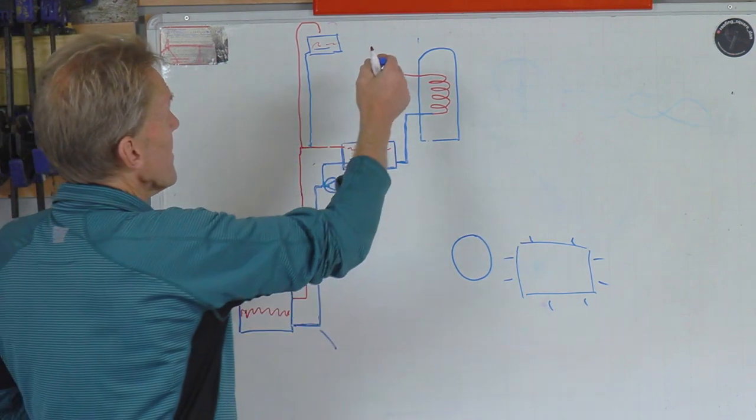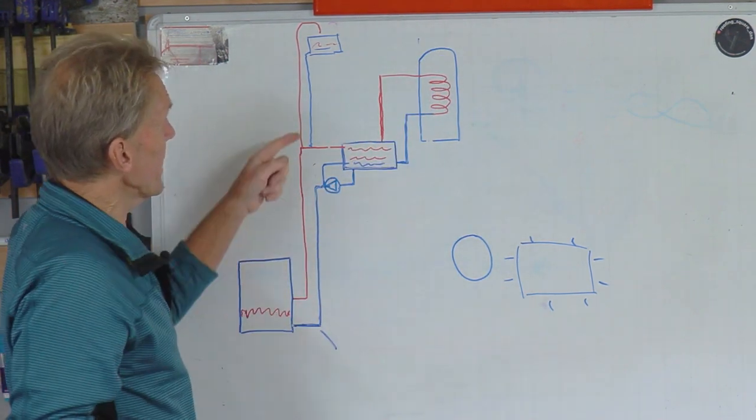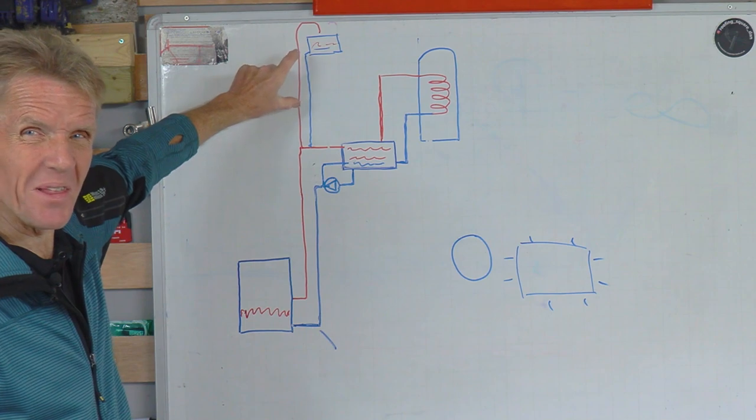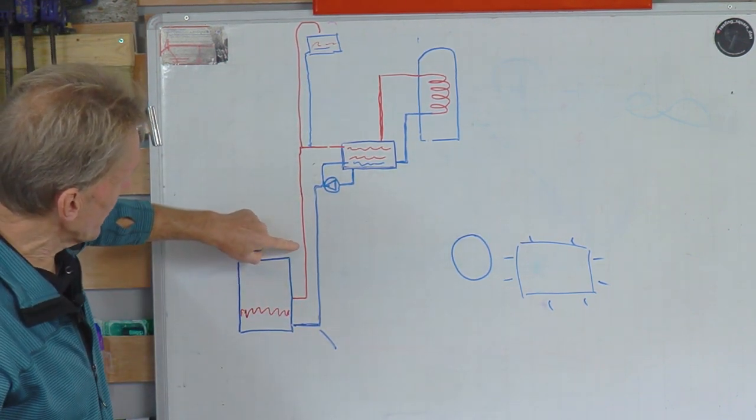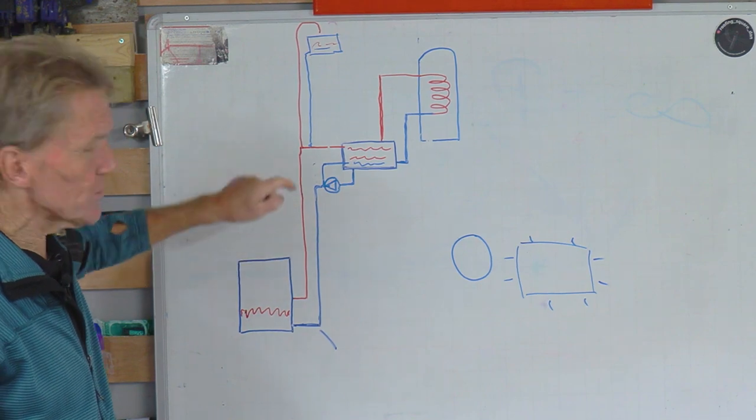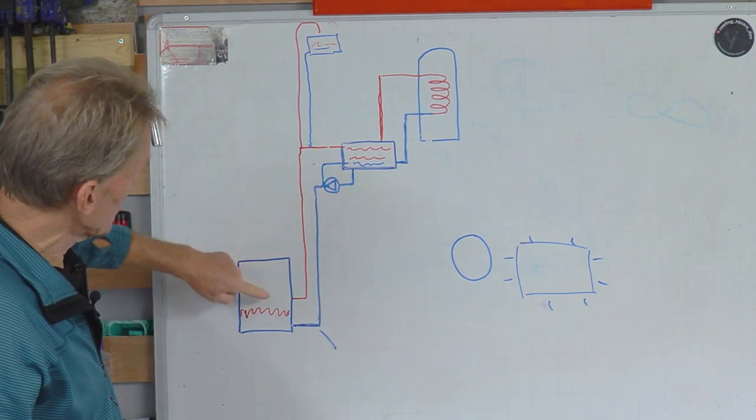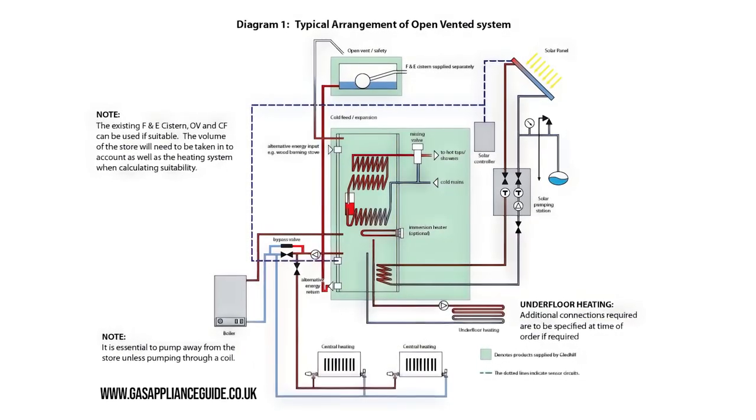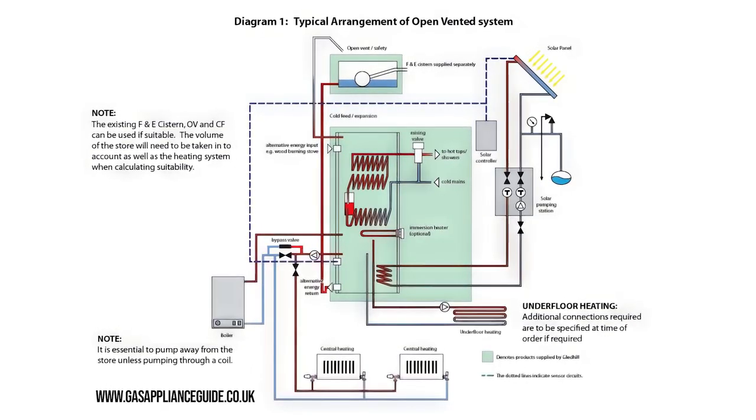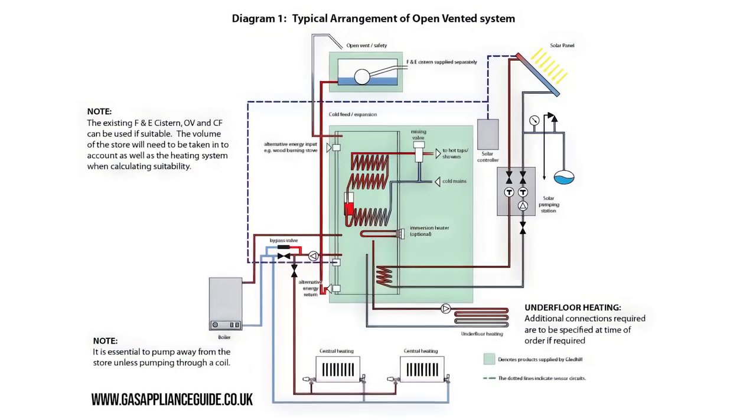Variations on that - we could have put that vent pipe over here and done it there, but just for sake of argument we put it there. The principle is exactly the same. We're open vented, we've got no interruptions, we've got no valves or pumps or anything on that system between the boiler and the open vent. So that's a very important principle - that is the open vented system and that's exactly what you need in any kind of solid fuel appliance.